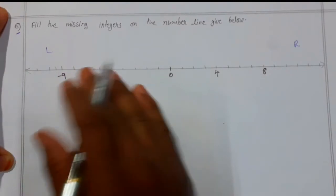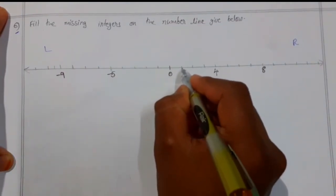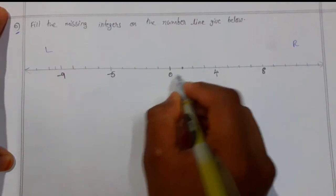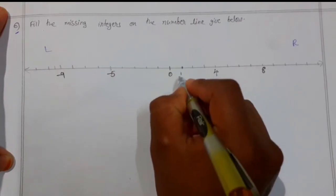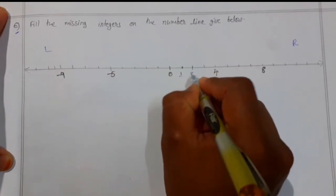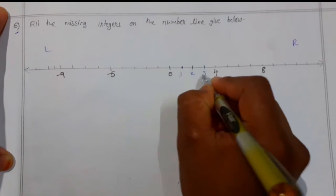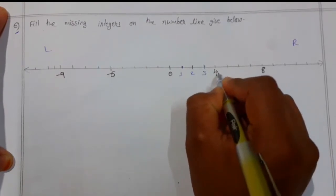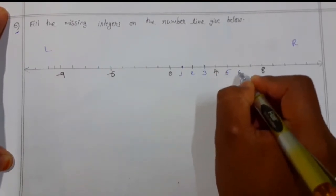The first right number to the zero is plus one, then this becomes plus two, this is three, then four is already marked. After we have five, six, seven, eight.